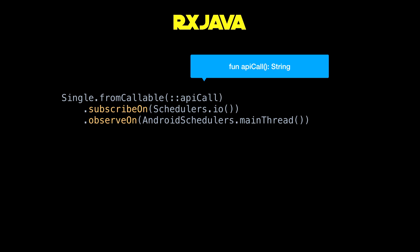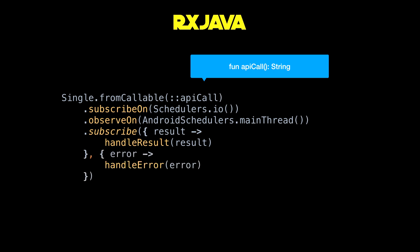What 'observe on' does is it means everything below 'observe on' will be on the specified thread. In this case, the 'handle result' will happen whenever we get the result back — so we are subscribing there to the single result. And then there's error handling: if there is any error that's thrown anywhere in this chain, it will end up in this section of code and you can handle the error from there.